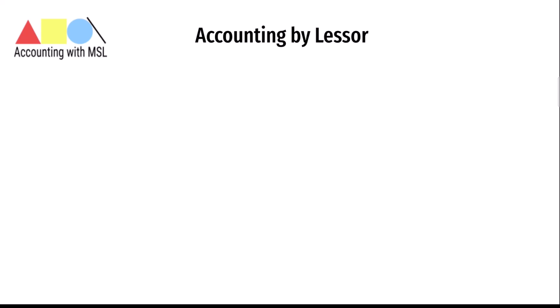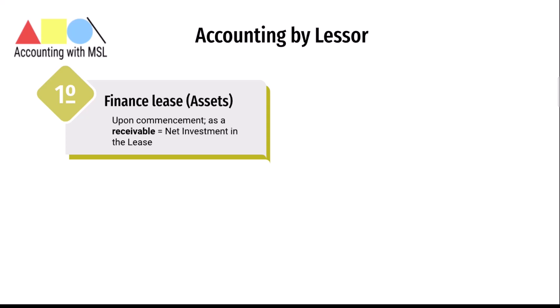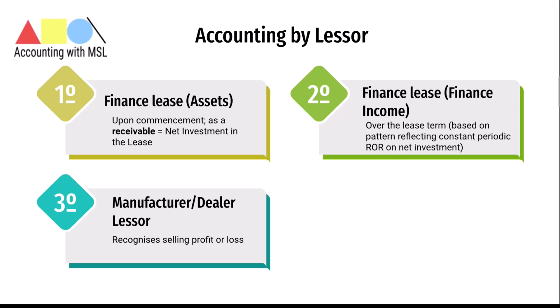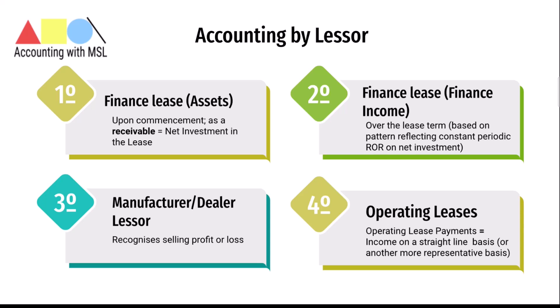Upon commencement of a finance lease, a lessor shall recognize assets held under the finance lease as a receivable at an amount equal to the net investment in the lease. The lessor is required to recognize finance income over the lease term based on a pattern reflecting a constant periodic rate of return on the net investment. For a manufacturer or dealer lessor, at commencement they recognize selling profit or loss in accordance with IFRS 15. Under operating leases, a lessor recognizes operating lease payments as income on a straight-line basis, or another systematic basis if more representative of the pattern in which benefit from the asset is diminished.